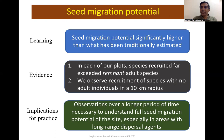Seed migration potential is more difficult to assess in initial years, but we found it was significantly higher than estimated. In each of our plots, species recruited far exceeded remnant adult species. In some cases we observed the appearance of species with no adult individual within a 10 square kilometer radius, which were being dispersed by long-range dispersal agents like elephants or birds with long flying ranges. Assessment of seed migration potential therefore requires observations over a longer period compared to assessing subsoil potential.